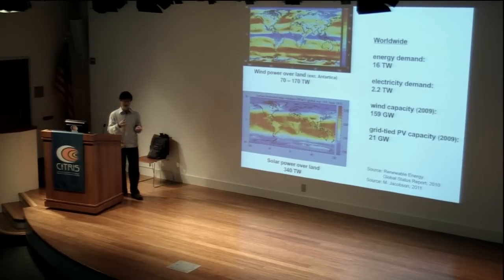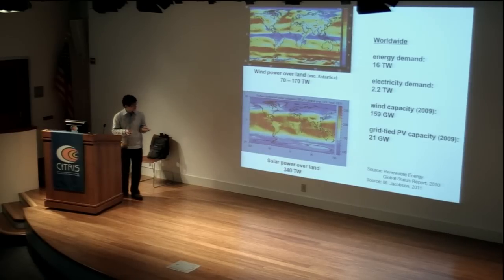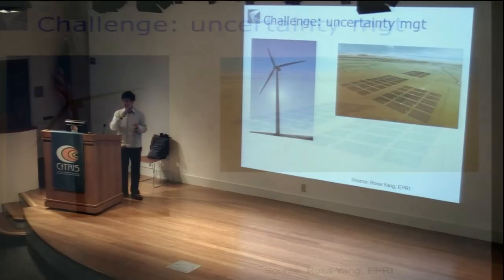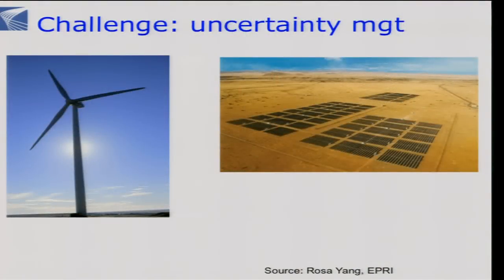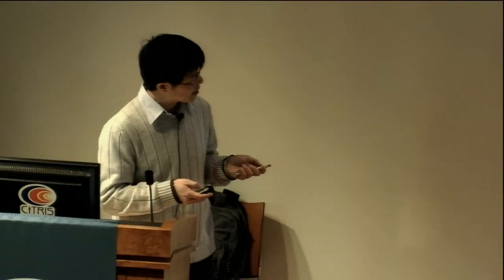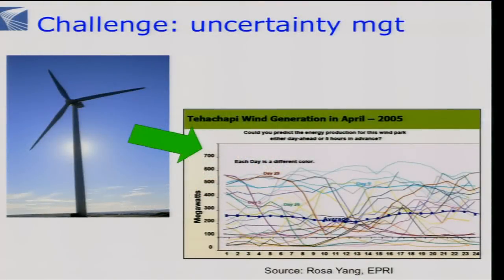That's exactly the kind of research Berkeley is known for. The barrier is high, but so is the potential reward. One challenge with renewables is the uncertainty of the renewable supplies. This is the output power from a Southern California wind farm as a function of time — 24 hours in a day, 30 curves, one for each day. The output power can fluctuate rapidly by large amounts and randomly — that's the challenge.